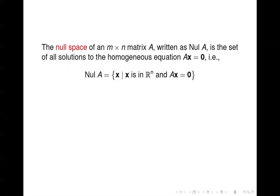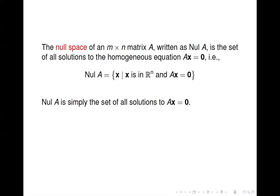So null(A) is simply the set of all x such that x is in ℝⁿ and Ax equals 0. X has to be in ℝⁿ because if A is an M by N matrix and we want to be able to multiply A times x, then there must be an entry in x for every column of A, and so x must be from ℝⁿ. So null(A) is simply the set of all solutions to Ax equals 0.